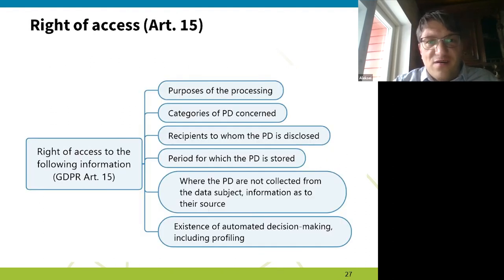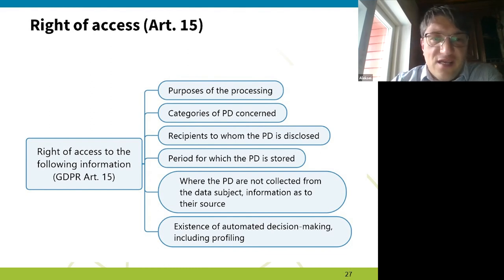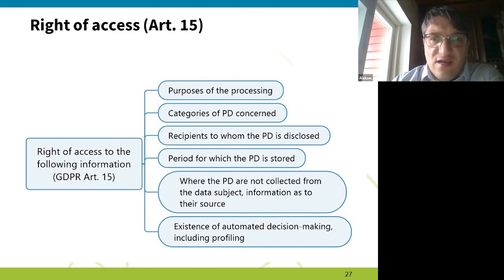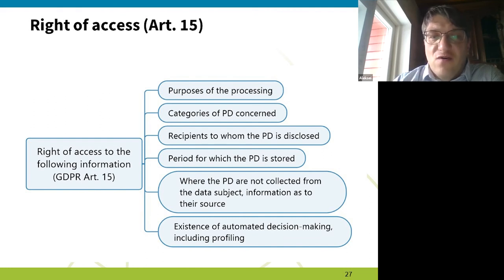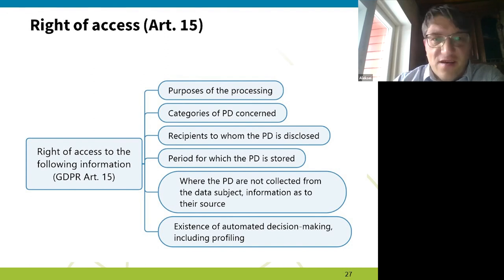Basically, the right of access catalog says the data controller has to tell you the purpose of processing, categories of data, recipients, and so on. It's quite a technical list, but the idea is that you have the right to know who is processing your data, what they are doing, what their intentions are, and how this could affect you.